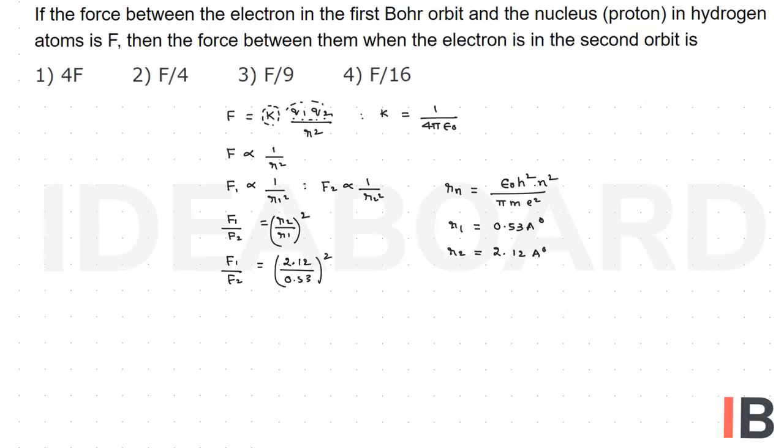The initial force is F, so F by F2 equals 16. Then F2 is equal to F by 16. This is the force in the second orbit, and the fourth option is the right option.